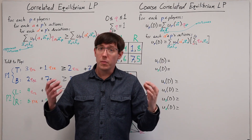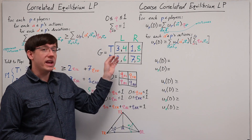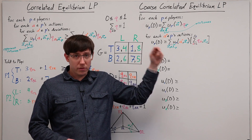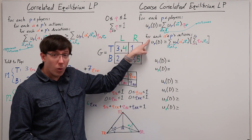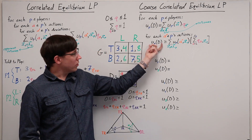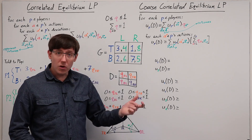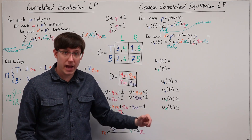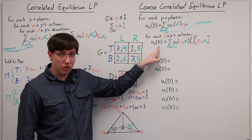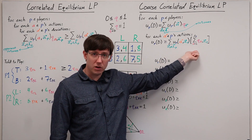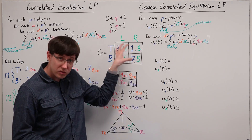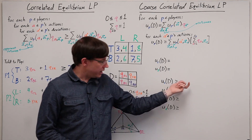For a coarse-correlated equilibrium, we have slightly different conditions, because the players are considering deviating before they have found out which action they are assigned. Each constraint enforces that for some player and one of that player's actions, it is not a beneficial deviation to switch to that action over participating in the distribution. We'll have a constraint for each player and each of their actions, but since all those constraints involve the player's expected utility of the overall distribution, we can simplify by having an equation for the expected utility of participating in the distribution, which we then use in our various constraints.